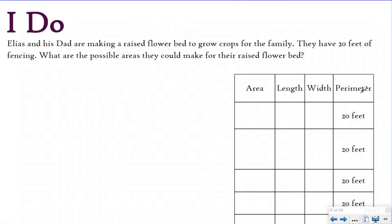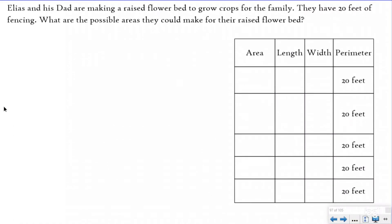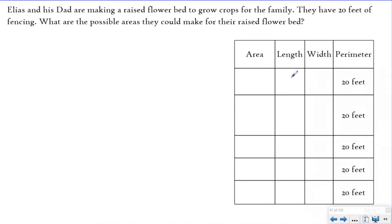Today we're going to do the opposite. So we'll have the same chart, but we're giving you the perimeter and trying to figure out the dimensions and then the area. This question says Elias and his dad are making a raised flower bed to grow crops for the family. They have 20 feet of fencing.